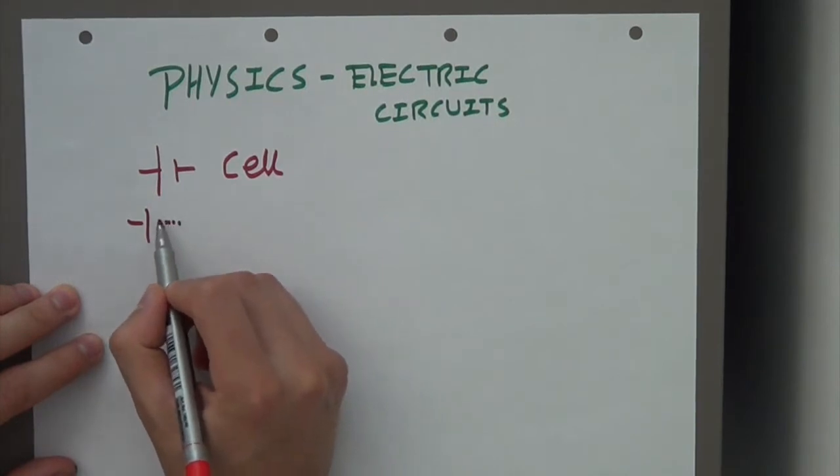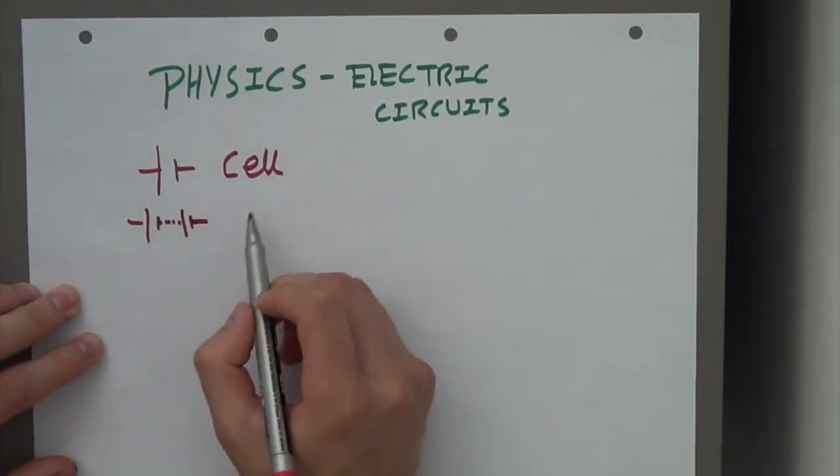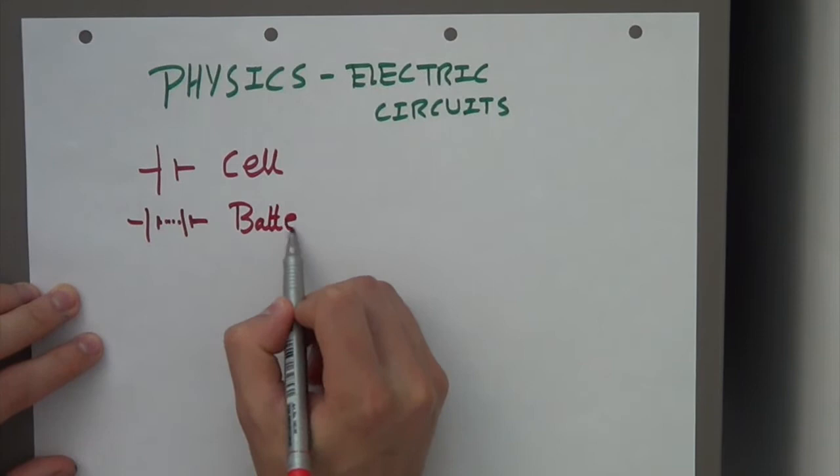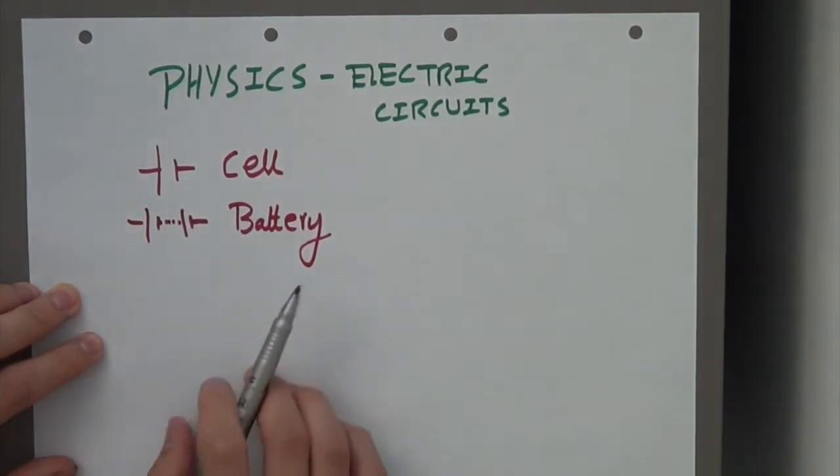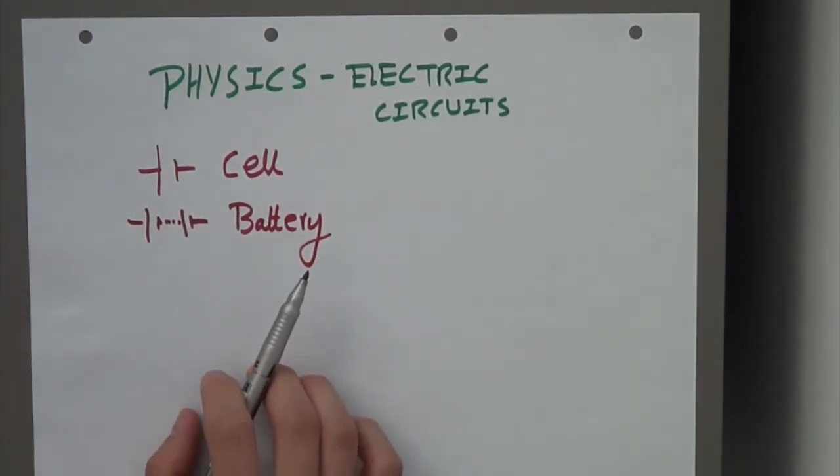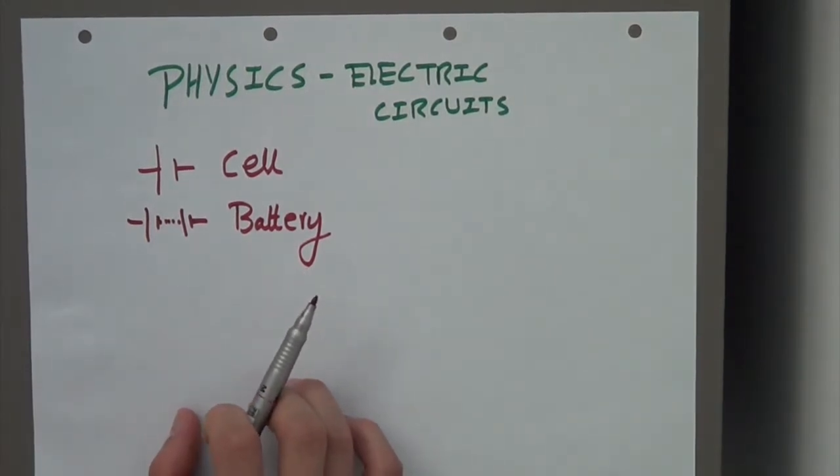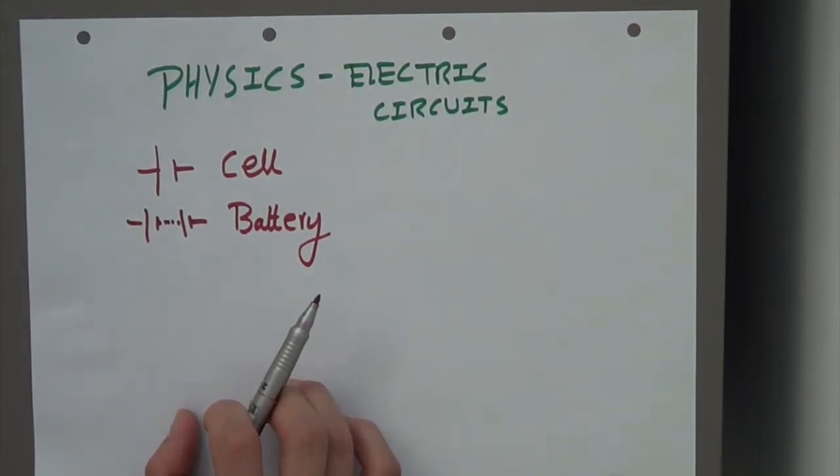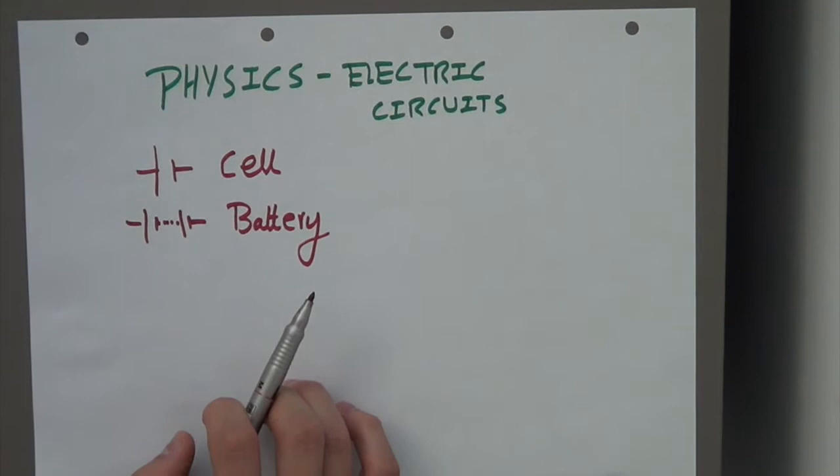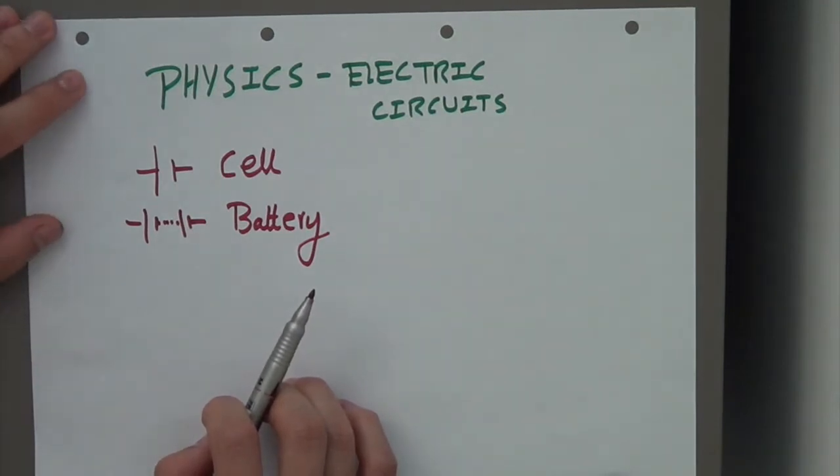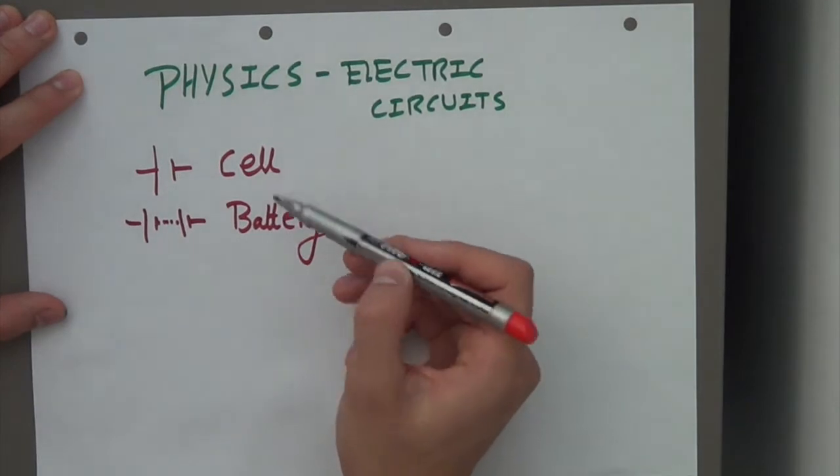The next symbol is this one - a battery. A battery has two or more cells. What are cells or batteries? They store chemical energy and provide the energy that gets transferred to the electrons and pushes the electrons around the circuit. The energy in those electrons gets transferred into the lamps or resistors or other devices that the circuit is powering.